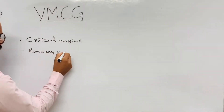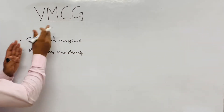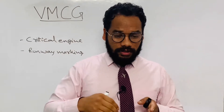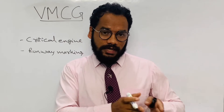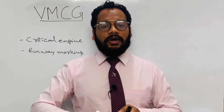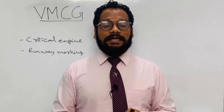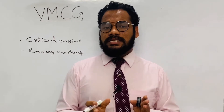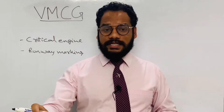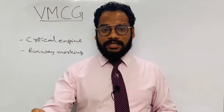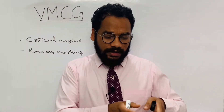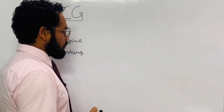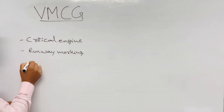Regarding runway marking for determining VMCG: before the flight tests are done, a blue line is marked on the runway, around five or ten meters from the central axis, on the opposite side of the engine which is to be shut down. For example, if we plan to switch off the right-hand side engine, the blue line is drawn on the left-hand side, five or ten meters from the center line of the runway.